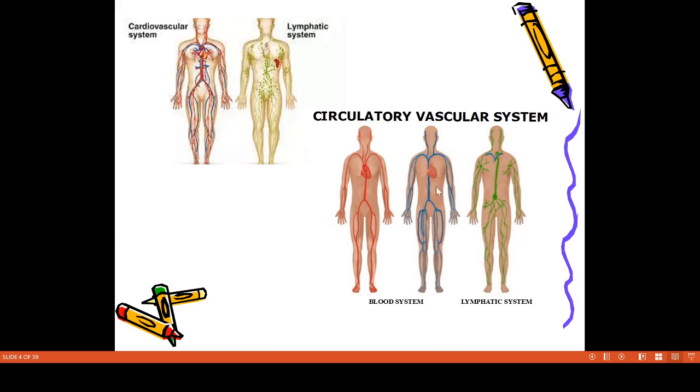In the blood system, there is the arterial system, the venous system, and pure blood. There is also a lymphatic system.